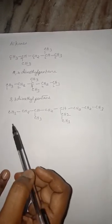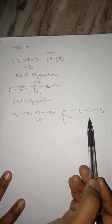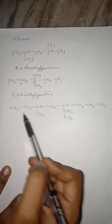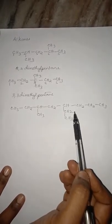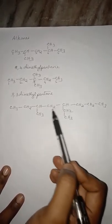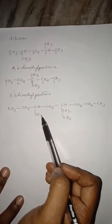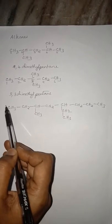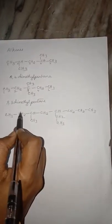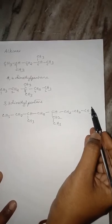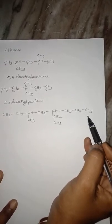Now students, you try to name this organic compound. You can pause the video and check after you try. Now let me name it. When you number from this side: 1, 2, 3, 4, 5, 6, 7, 8 — this is the longest chain.